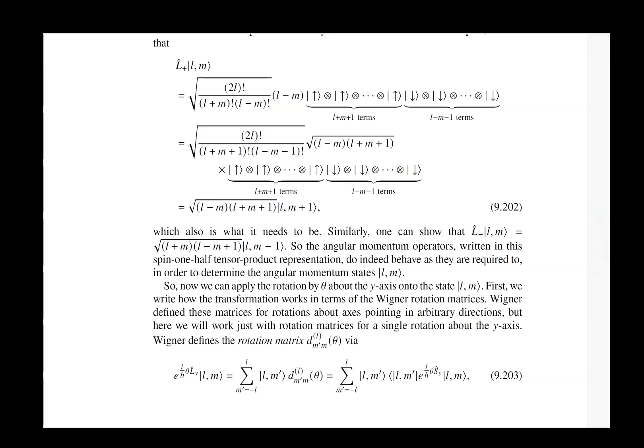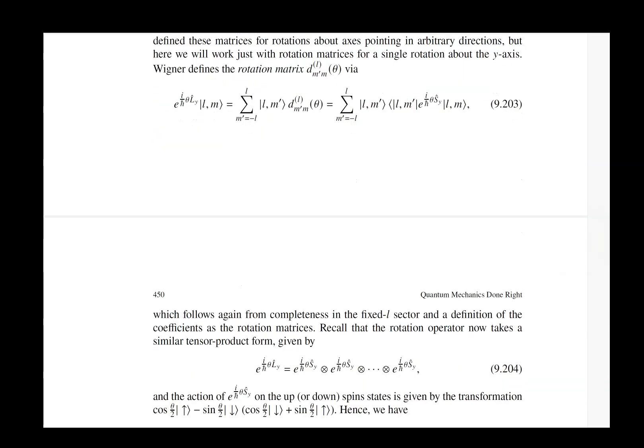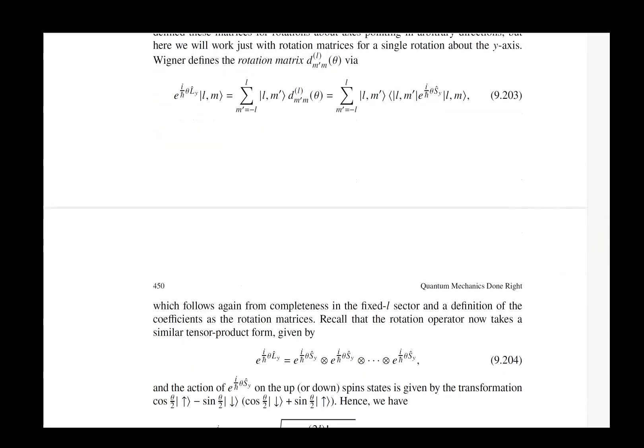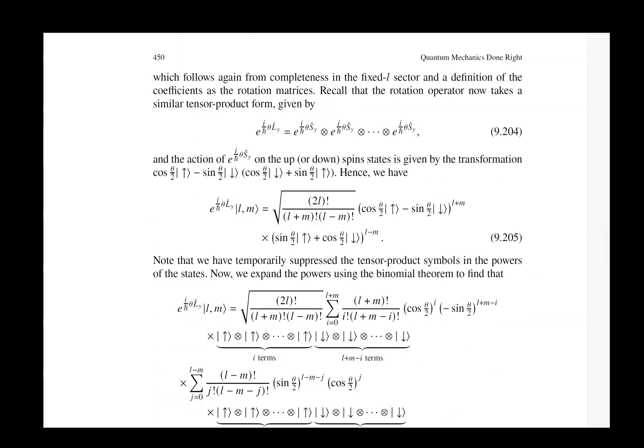Now this might seem like an odd thing to do but this is the way Wigner liked to work with angular momentum. Reduce everything down to working with n spin operators and then work out all the algebra because it could be worked out exactly with regards to those n spin operators. In particular this is the way an object called the rotation matrix is evaluated and that is something that we do here.